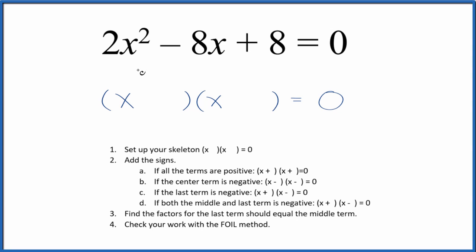If you're asked how to factor this equation, 2x squared minus 8x plus 8 equals 0, here's how you could do it.